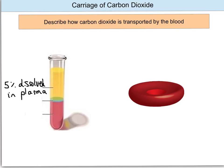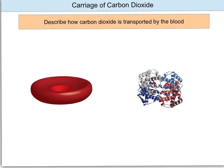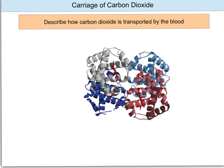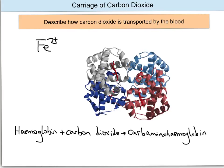Inside the red blood cells, or erythrocytes, is a compound called haemoglobin. Haemoglobin is what binds to the oxygen to allow red blood cells to transport oxygen around the blood. This is a ribbon diagram of haemoglobin. This protein has four separate domains of amino acid chains, and we call these subunits. Each subunit contains a heme group, which contains an iron ion. Not only can oxygen bind to haemoglobin, but carbon dioxide can also bind to haemoglobin, and this forms carbaminohaemoglobin.